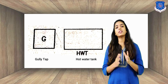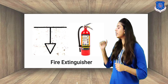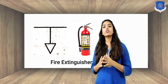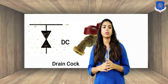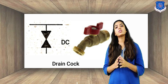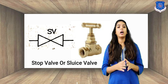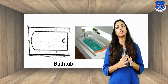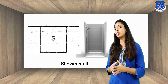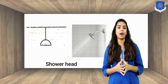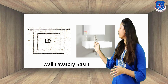Now we will see how to showcase each fitting with its specific symbol. As you can see on the screen, each fitting is shown with its reference image and specific symbol. These symbols are used in plumbing drawings, showing multiple types of bathroom fittings with their symbols used in architectural plans.